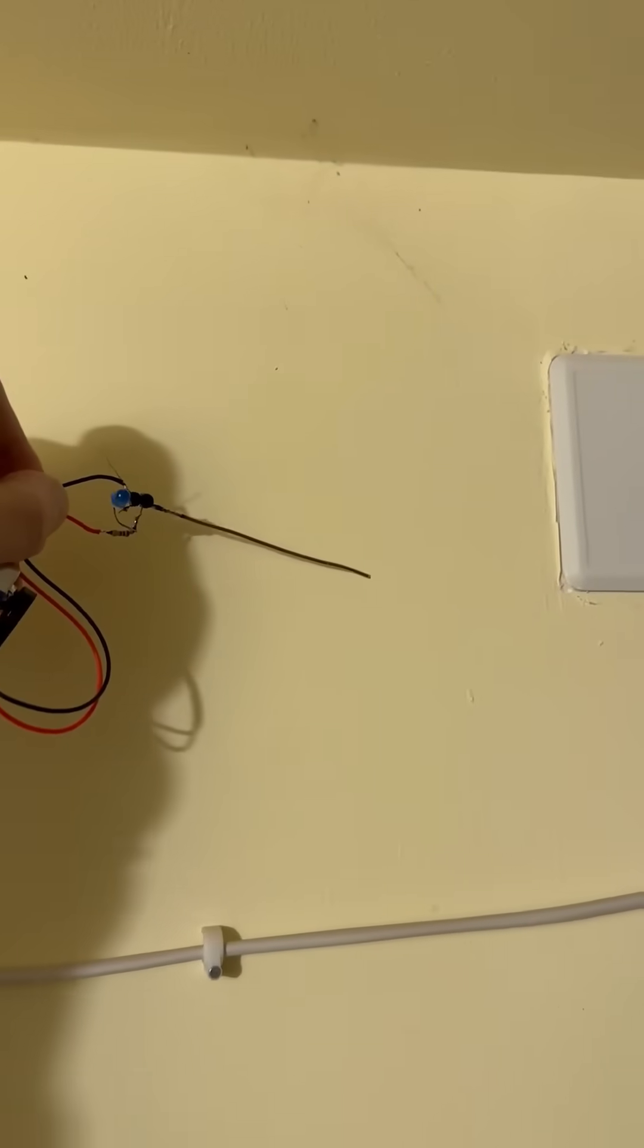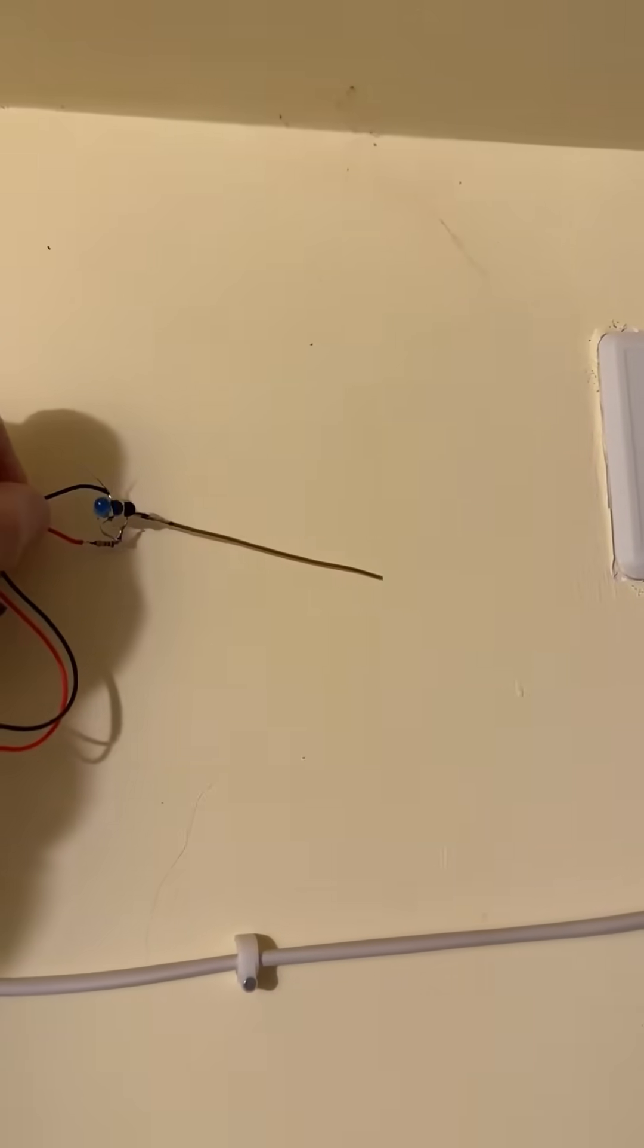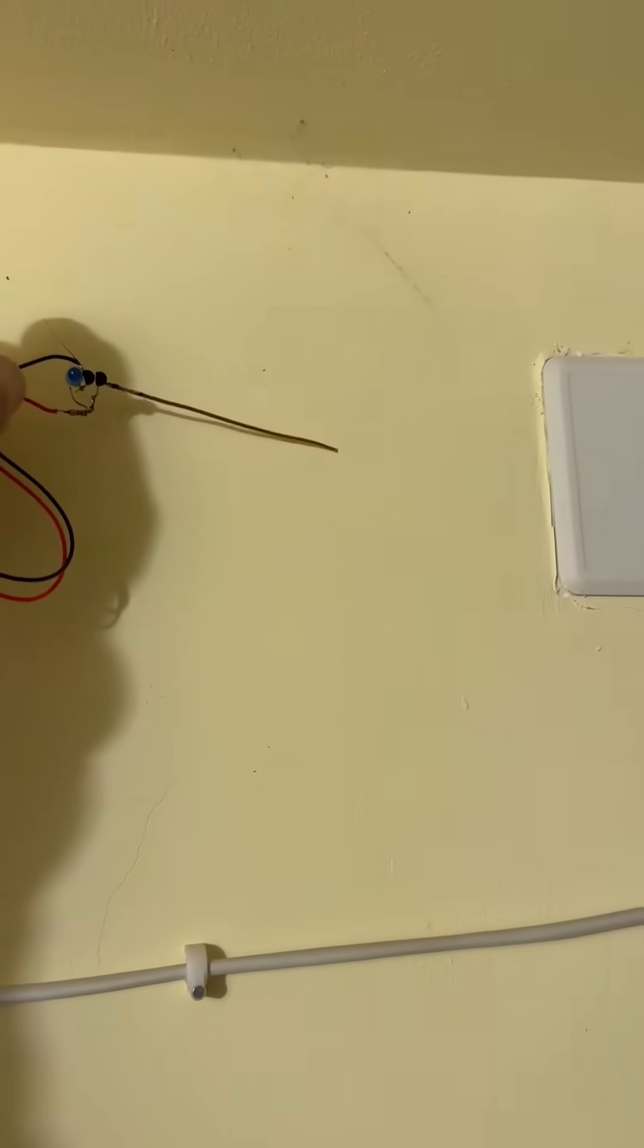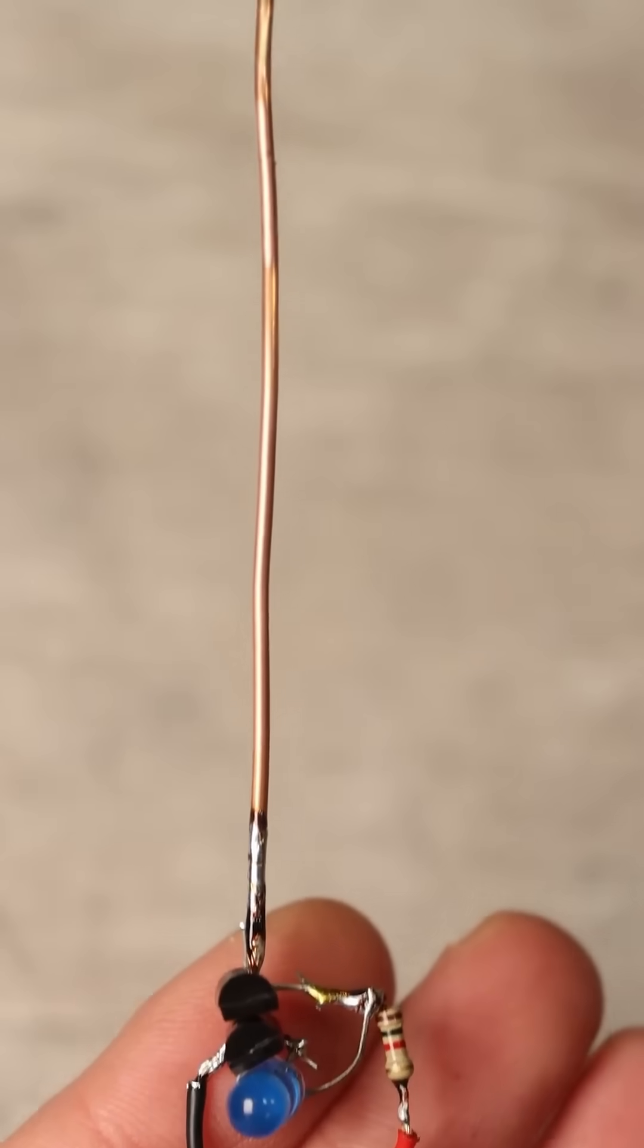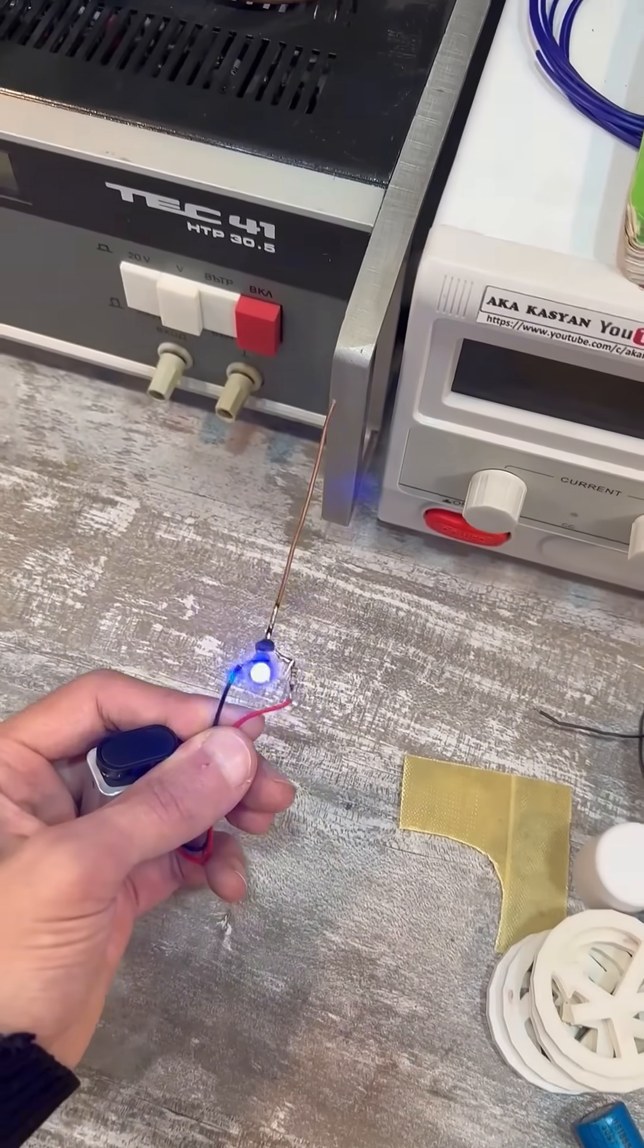This detector can find hidden wiring in the wall if the wiring is not under tiles and not buried deeply. Another point, such a detector will react to devices connected to the network, as well as to any static.